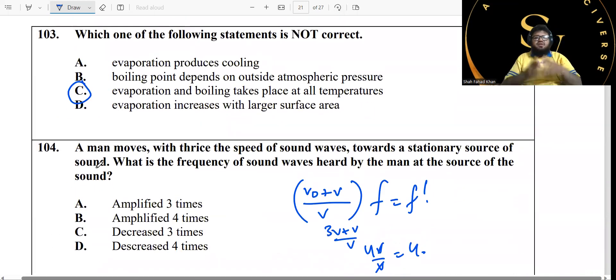A man moves with twice the speed of sound waves towards a stationary source. So basically, you have the source right over here, and this is a man moving with the speed of 2v towards the source. They're asking us the apparent frequency compared to the real frequency. The formula that we use is this one, because whenever you're moving towards the source, it's always observer over source. So the observer is moving towards, so the answer has to be bigger, so it has to be a positive sign.